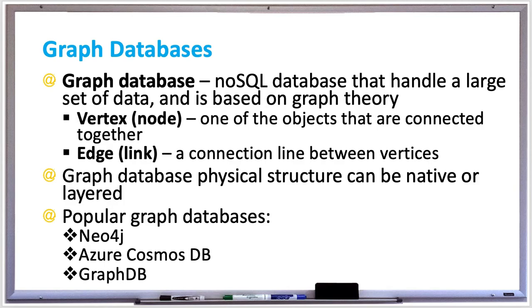A graph database layer is a graph model on an alternative database mode, such as implementing a property graph on top of a relational database. A layered structure is not optimized for a graph database.